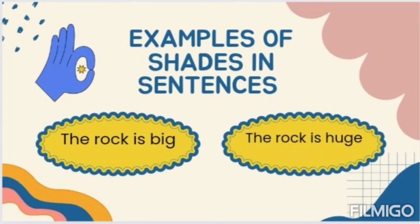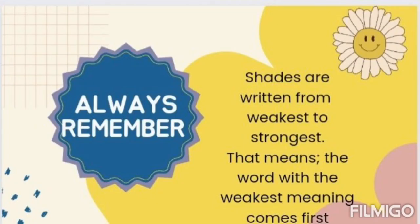Examples of shades in sentences: The rock is big. The rock is huge. Now we have explained the meaning of big and huge. Always remember, shades are written from weakest to strongest. That means the word with the weakest meaning comes first. Like big and huge — big has a weaker meaning than huge.